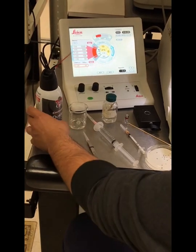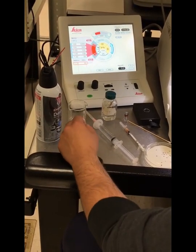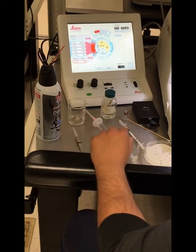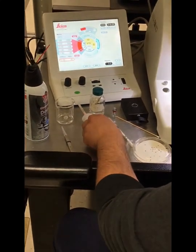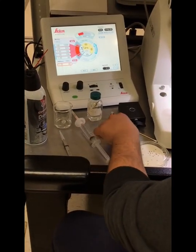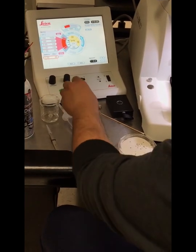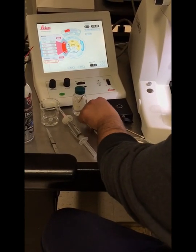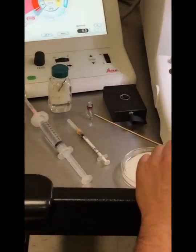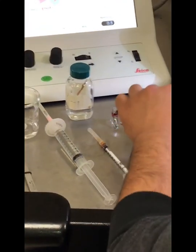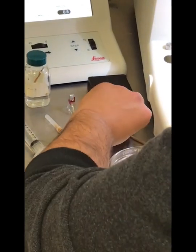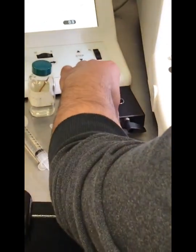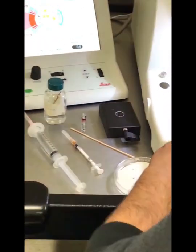We'll have some duster, a beaker, forceps, a syringe with a filter, another syringe, chloroform, diamond knife, and a glass knife with the boat. We'll have our grids and a perfect loop.